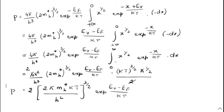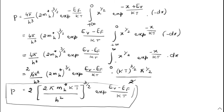This is the P value — the result we expected. This expression represents the number of holes present in the valency band. If you have any doubts, you can ask. Thank you everyone.